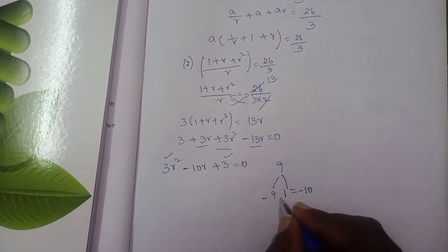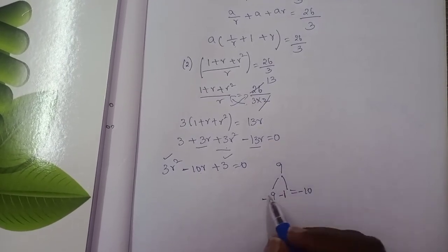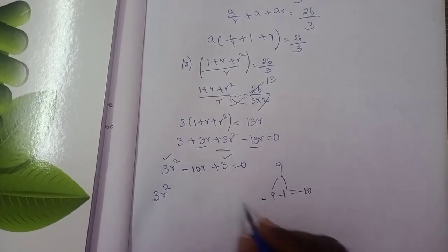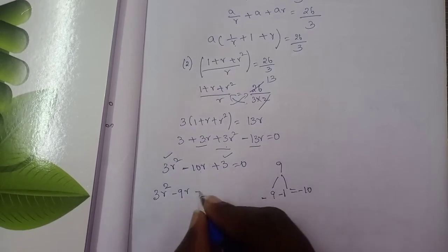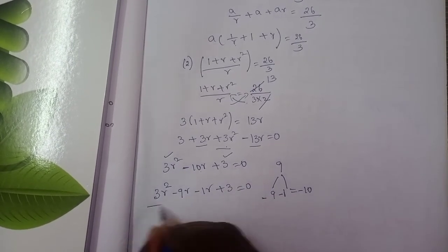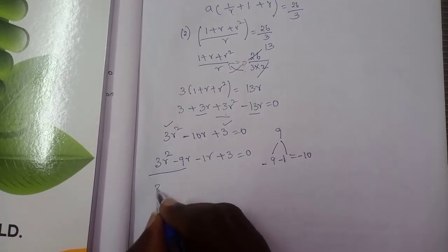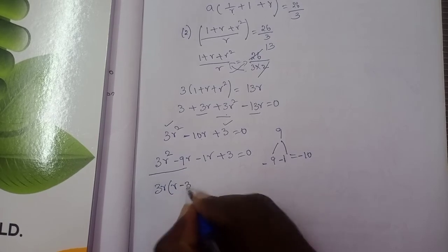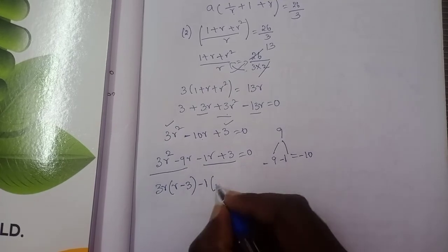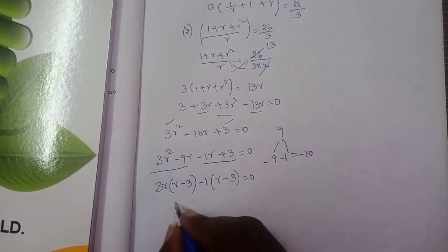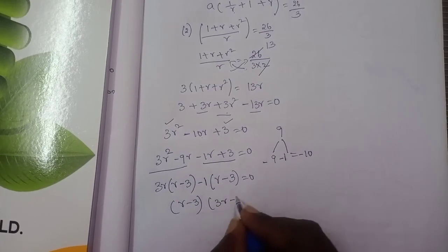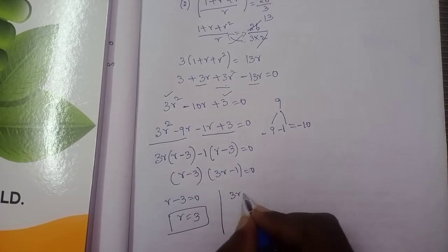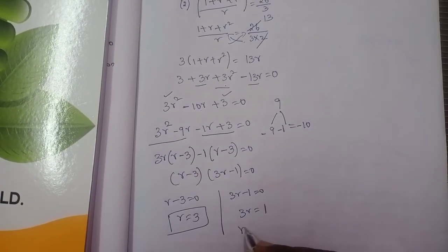Factoring 3r² - 10r + 3: split as 3r² - 9r - r + 3 = 0, giving 3r(r - 3) - 1(r - 3) = 0, so r = 3 or r = 1/3.